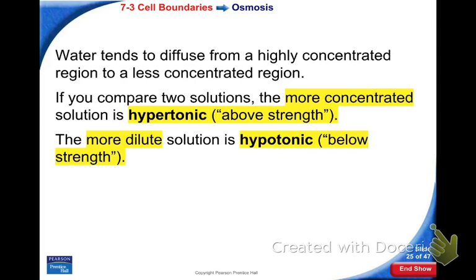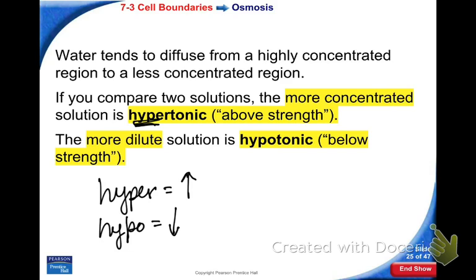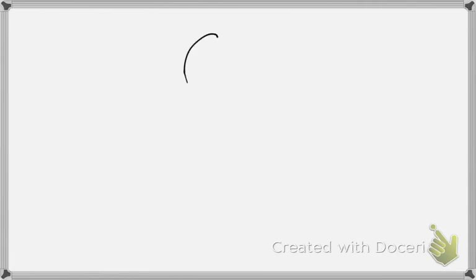These words — hypertonic, hypotonic, and isotonic — pay attention to the prefixes. Hyper means more. Hypo means below. Iso means even. We are going to be paying attention to the concentration of the solution outside of the cell. I'm going to draw cells for you so you'll have these drawn in your notebook. Here we have a cell that is 70% water and 30% salt.